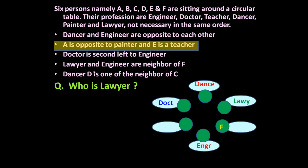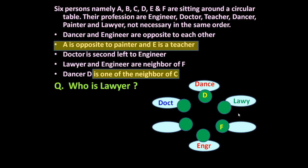The next statement is: dancer D is one of the neighbors of C. Dancer is D, but C could be doctor or lawyer — we don't know. So let us underline this statement too, because presently we cannot say anything. This much information is completed for now.